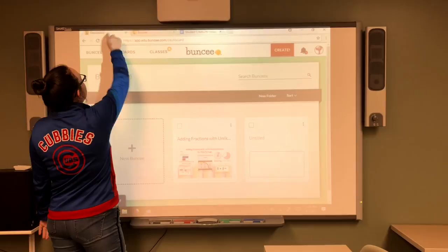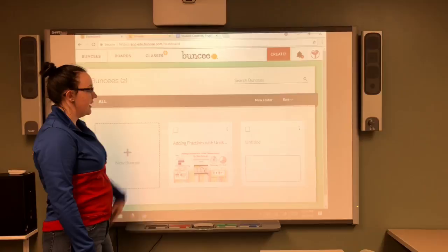First, you're going to log into your Buncee account. You can go back to Buncee here. The login button will be in this top right corner. Once you log in, you will see your dashboard. I have an example here listed for you.